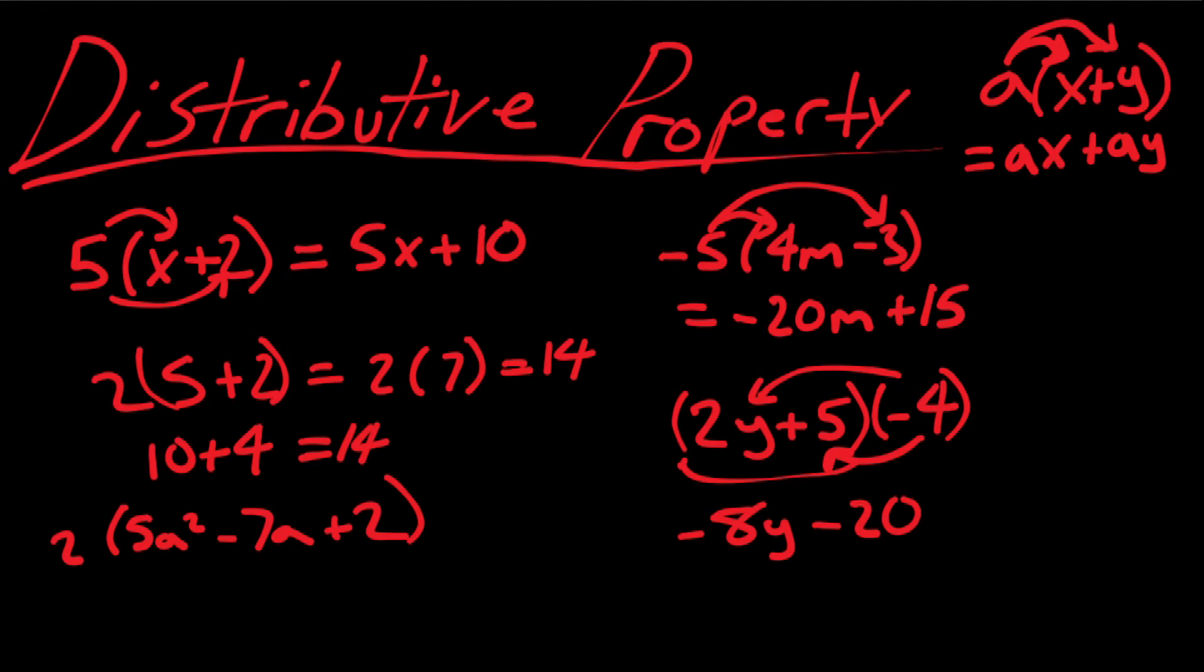So, first let's do 2 times 5a squared, that's 10a squared. And then we have negative 7a, so that would be negative 14a. And then we had a positive 2 times a positive 2. And here, if you guessed 4, then you were correct.